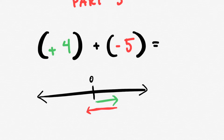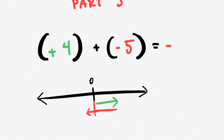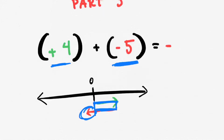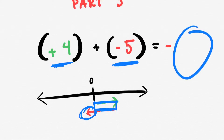So I know right off the hop that my number is going to be negative. Now the trick is to figure out what is that value — what's the absolute value of my answer. Here are my two arrows. What we're trying to find is the length of the leftover arrow. Everything to the right of zero cancels itself out, so those two lengths are the same. All that's left is when you take the negative five and chop off that four — so the value left is five minus four, which is one. So this is going to be negative one.